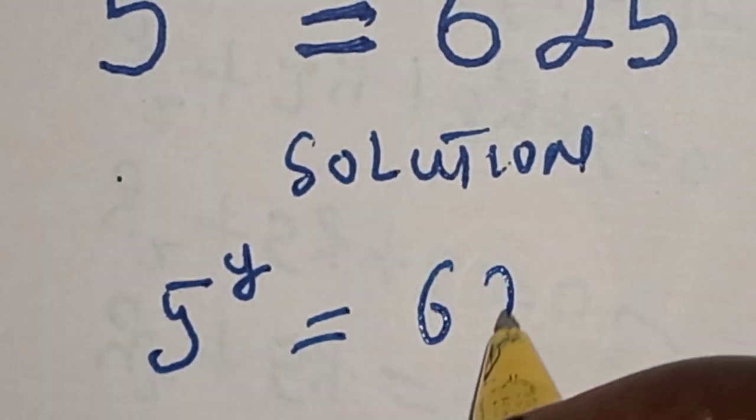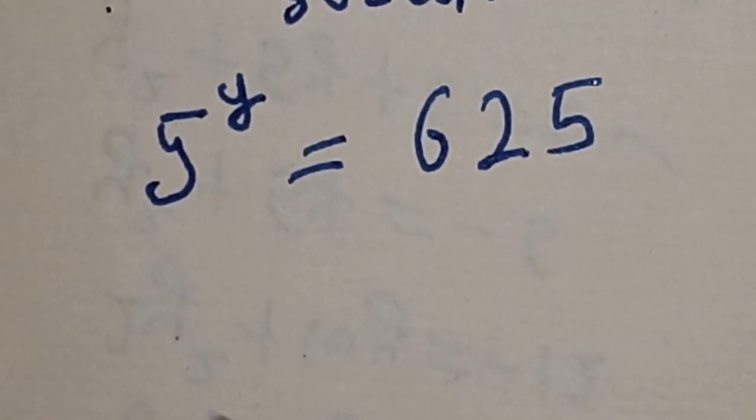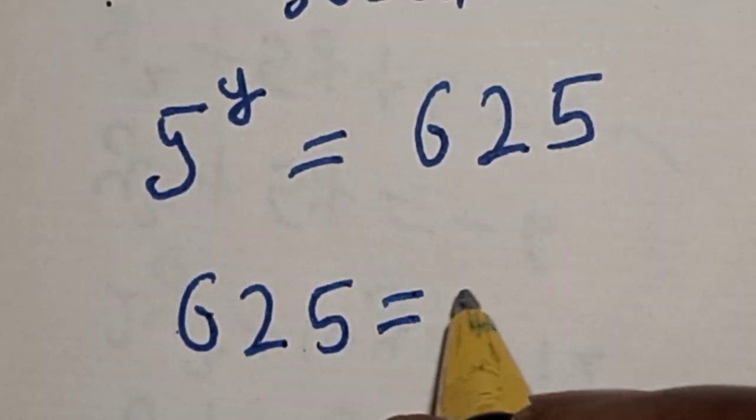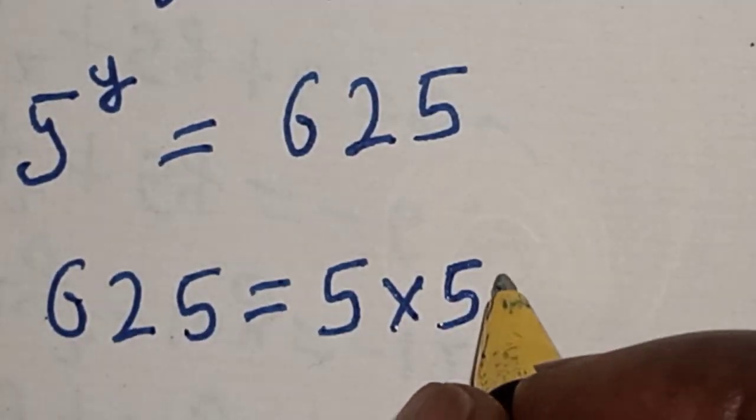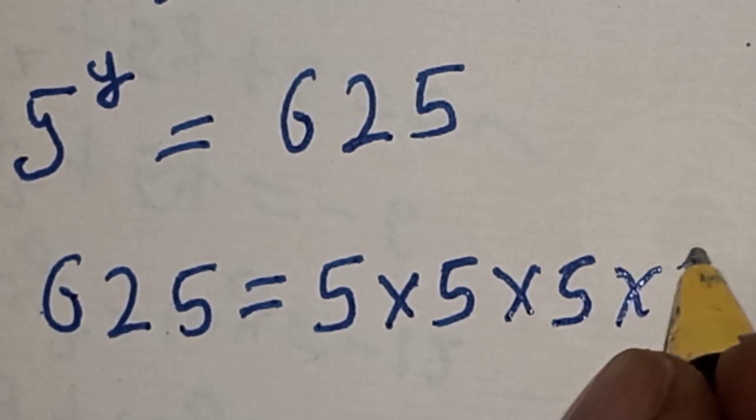equal to 625. 625 is equal to 5 times 5 times 5 times 5.